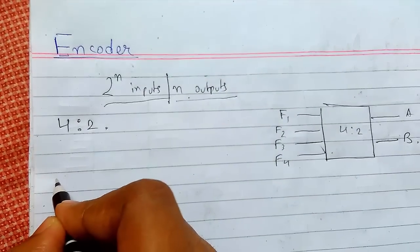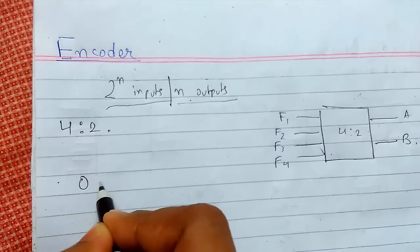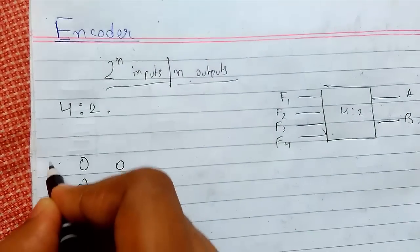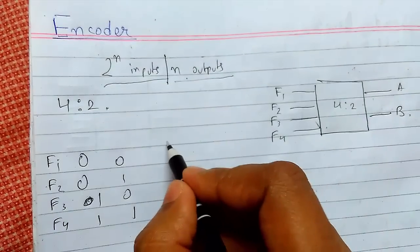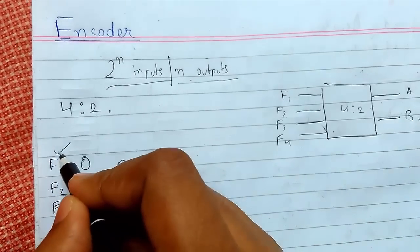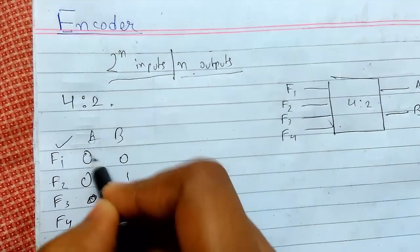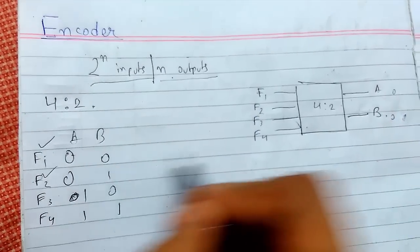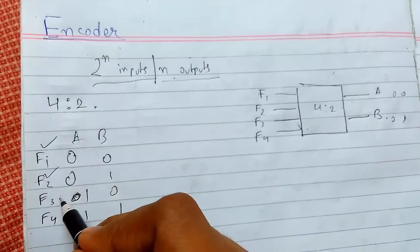If you look at the decimal values in the truth table: if you select line f1, we will get the output as 0, 0. If you select f2, we will get 0, 1 as output, and similarly for all of the other input lines.